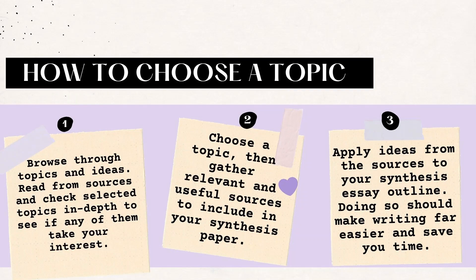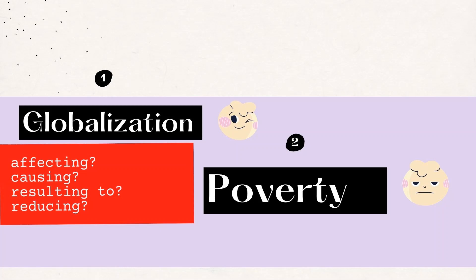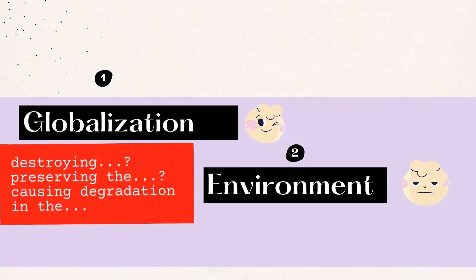Check the connection between globalization and poverty: does globalization widen the gap, cause poverty, or is it reducing poverty? For example, if you think globalization reduced world poverty, that itself is your building block for a thesis statement. What about the environment — is globalization destroying it or protecting it? For example, your thesis could be: 'Globalization is causing the degradation of the environment.' Then verify you have available sources to support that argument.